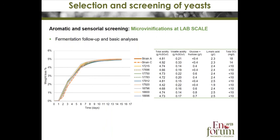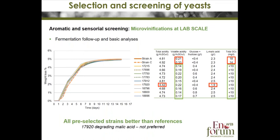The chemical composition of the samples was then determined. We can see that strain 7920 degrades malic acid, which is not a positive oenological characteristic for Sauvignon wine selection, so this strain is not preferred. The table also shows that reference strains produce significantly more sulfur dioxide and volatile acidity at the end of fermentation than the preselected strains.